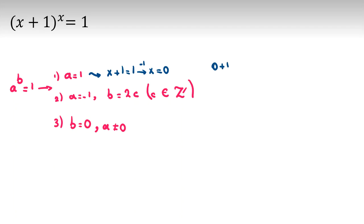And if we check, 0 plus 1 to the power of 0 will be 1 to the power of 0, which is 1. So one answer is this, x equal to 0.